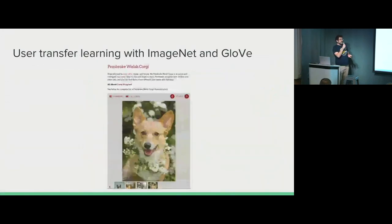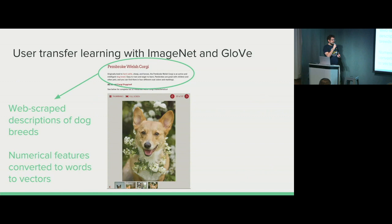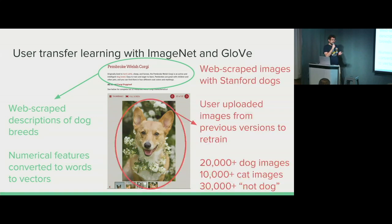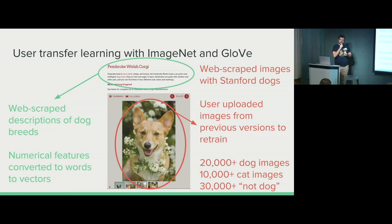In order to get my data and use a model, I did transfer learning with ImageNet and GloVe. To get all the data for this transfer learning, I first web scraped descriptions of dog breeds from a dog breed website, used numerical features and converted them to words and then back to vectors again. I used web scraped dog images along with Stanford Dogs, which is a dataset filled with dog images that is just fun to look at in general, and then user uploaded images from previous versions to retrain.